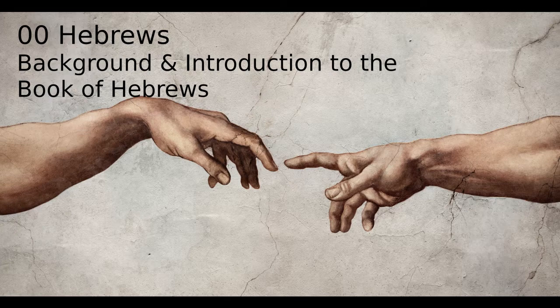Now, his identity, again, he doesn't tell us, but there's, of course, lots of theories. And there are five main ones. First one is Barnabas.